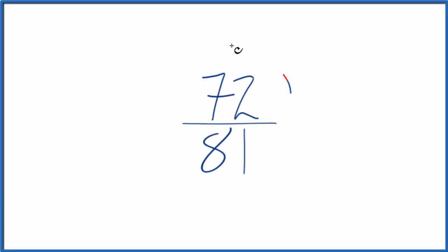Let's simplify the fraction 72 over 81. What we want to do is find another fraction that's equivalent, with the same decimal value as 72 divided by 81, just that we've reduced the fraction to its lowest terms, its simplest form.